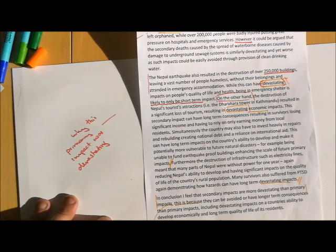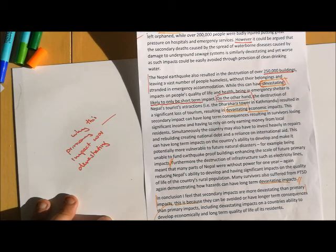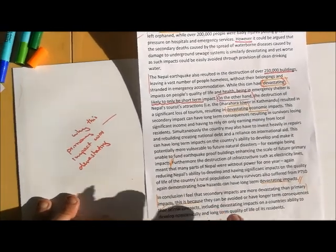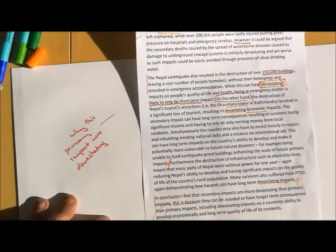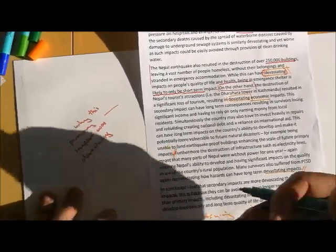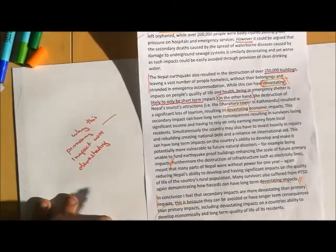This is because they can be avoided or have longer-term consequences than primary impacts, including devastating impacts on a country's ability to develop economically and long-term quality of life of its residents. Nothing really new in there. I've talked about the fact that secondary impacts can stop a country developing and have impacts on the quality of life of its residents, for example, provision of clean drinking water, lack of electricity, but I'm just summarizing my argument.